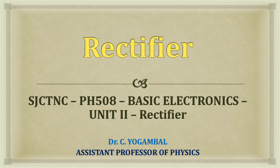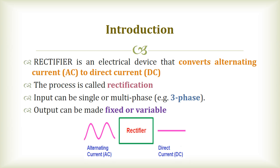What do you mean by rectifier? It is a device which converts the alternating current signal into direct current signal. Rectifier is an electrical device that converts alternating current to direct current. This process is called rectification. We can use single phase or multiphase of alternating current signal as input.